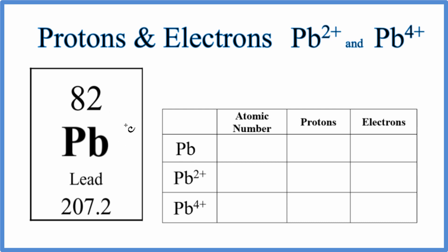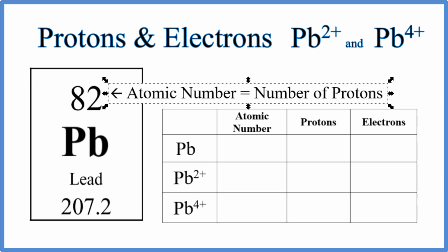On the periodic table, when we look at lead, the atomic number, that's the number of protons. So we know the atomic number is 82 for Pb, for lead here, and the number of protons, that's going to be 82 as well. That's the definition of lead. So we have lead here, 82 atomic number, protons 82.